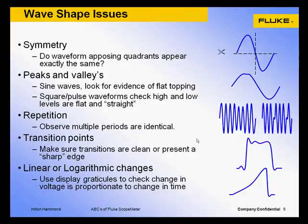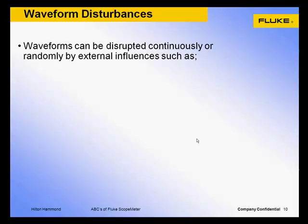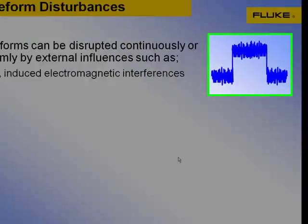For linear or logarithmic changes, decrease the time-based span to inspect the transition either from a low voltage to a high or vice versa, using the display graticules to assess whether the change in voltage level is proportionate to the change in time. Waveform disturbances are usually electrical phenomena that find their way into the circuit. Noise is essentially induced electromagnetic interference, usually from heavy duty electrical machinery or RF transmitting devices. Any length of electrical conductor can become an antenna that picks up radiating magnetic fields, from devices like cell phones to high voltage discharge lighting systems or variable frequency motor drives.